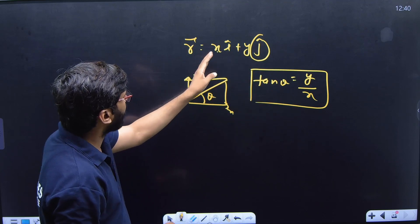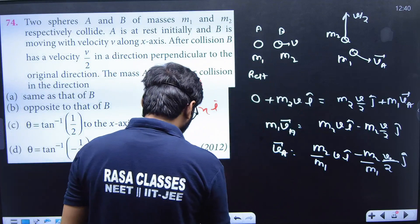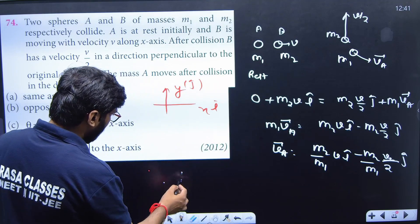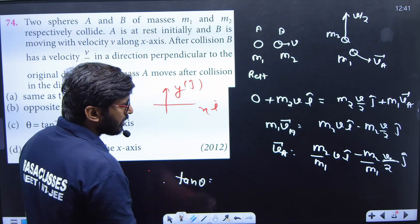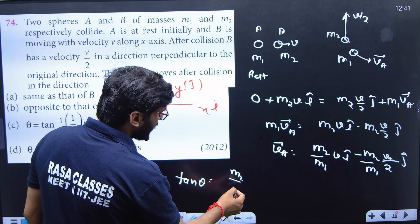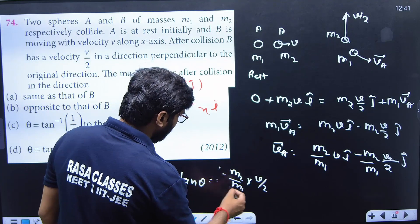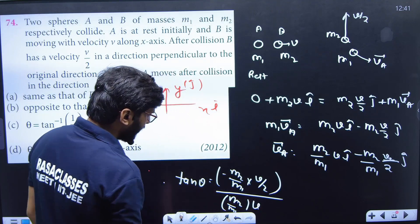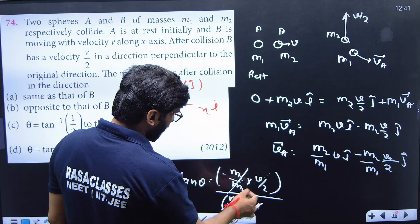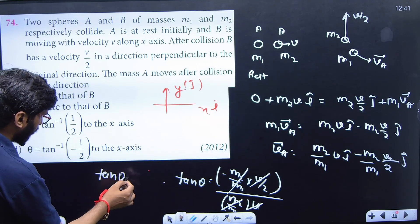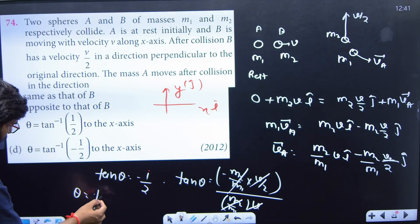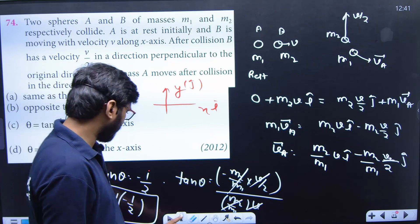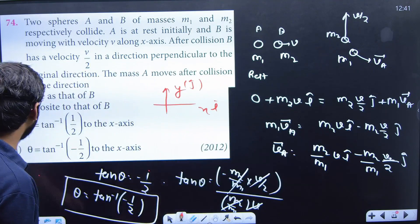So we place the ĵ coefficient in the numerator and the î coefficient in the denominator: tan θ = [m2/m1 · v/2] ÷ [m2/m1 · v]. Here m2/m1 cancels and v cancels, leaving tan θ = −1/2. Therefore θ = tan⁻¹(−1/2). Checking the options, the correct answer is option D: tan⁻¹(1/2).